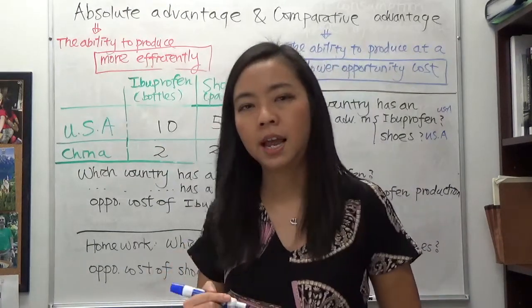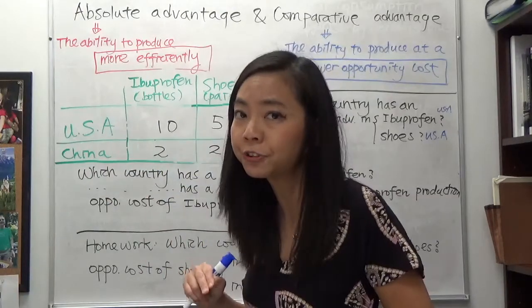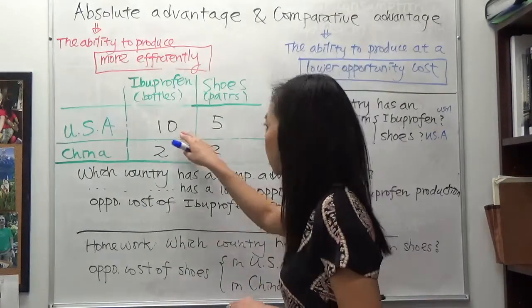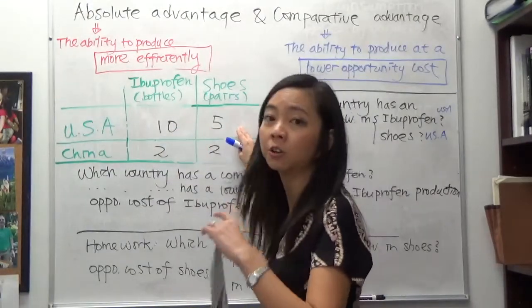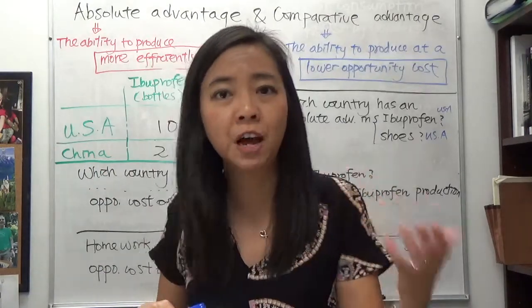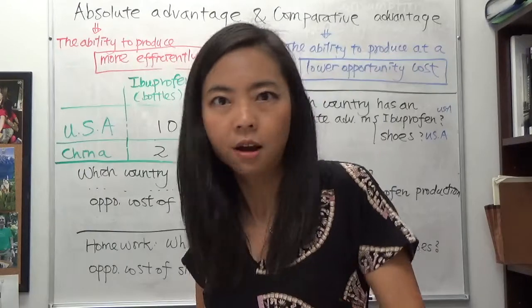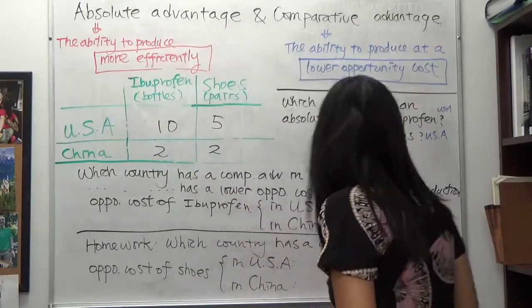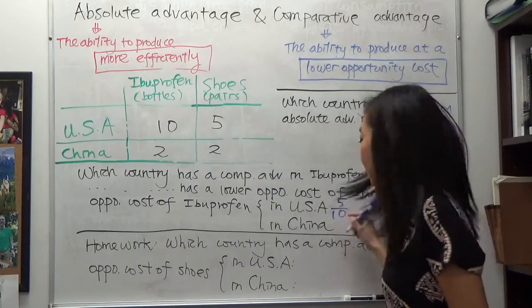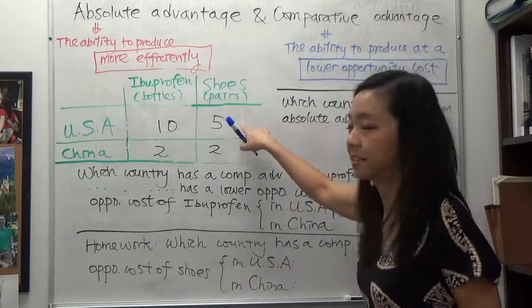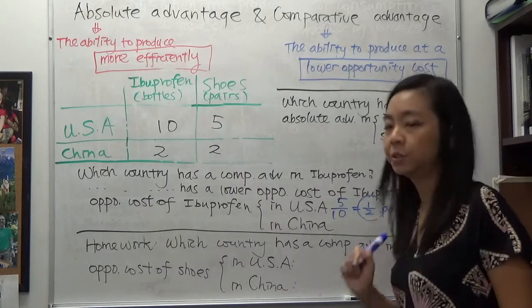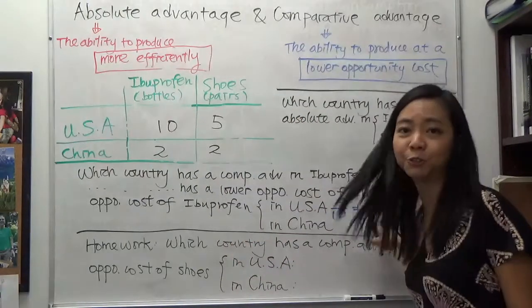Suppose you go to a store and you want to buy ibuprofen. You ask the owner: what is the cost of ibuprofen in your shop? The owner tells you the cost of 10 bottles of ibuprofen is $5 — treat that as a currency. So 10 bottles of ibuprofen cost $5; what is the cost of one bottle? We divide 5 by 10, because 5 is the currency. So the opportunity cost of ibuprofen in the US is 5 divided by 10, which gives you one half — that is, half a pair of shoes. The opportunity cost of one bottle of ibuprofen is half a pair of shoes in the US.